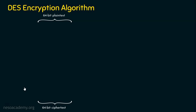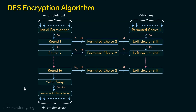What is happening inside this encryption algorithm? Here is the DES encryption algorithm: the 64-bit plaintext is given to the initial permutation function. After performing the permutation, it gives 64 bits as output. There are 16 rounds in DES — round 1, round 2, up to round 16. For every round, 64 bits are given as input and the output of every round is going to be another 64 bits.